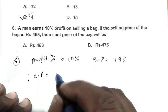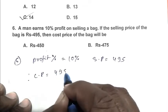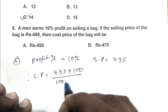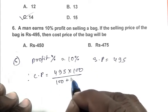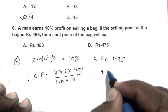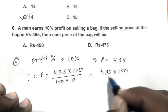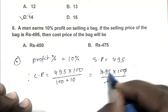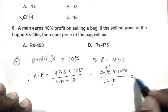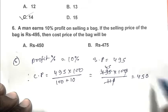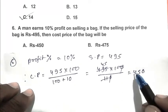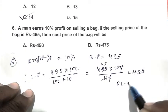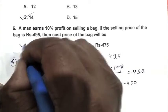Therefore, cost price equals 495 multiplied by 100 divided by 100 plus profit percentage, that is 10. So, 495 multiplied by 100 divided by 110, that is 450. Cost price is Rs. 450. So, A is the right answer.